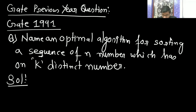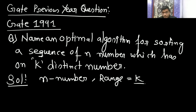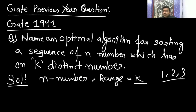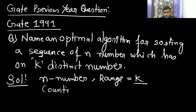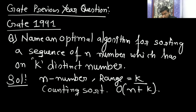Now which sorting should you use? Think a little bit. It says name an optimal algorithm for sorting a sequence of n numbers. You are having n numbers and the range here is k — which has k distinct numbers. So you are going to use Counting Sort, because Counting Sort works when you have n numbers and you know the range. The time complexity of Counting Sort is O(n + k) — that is, the number of elements plus the size of the range array.